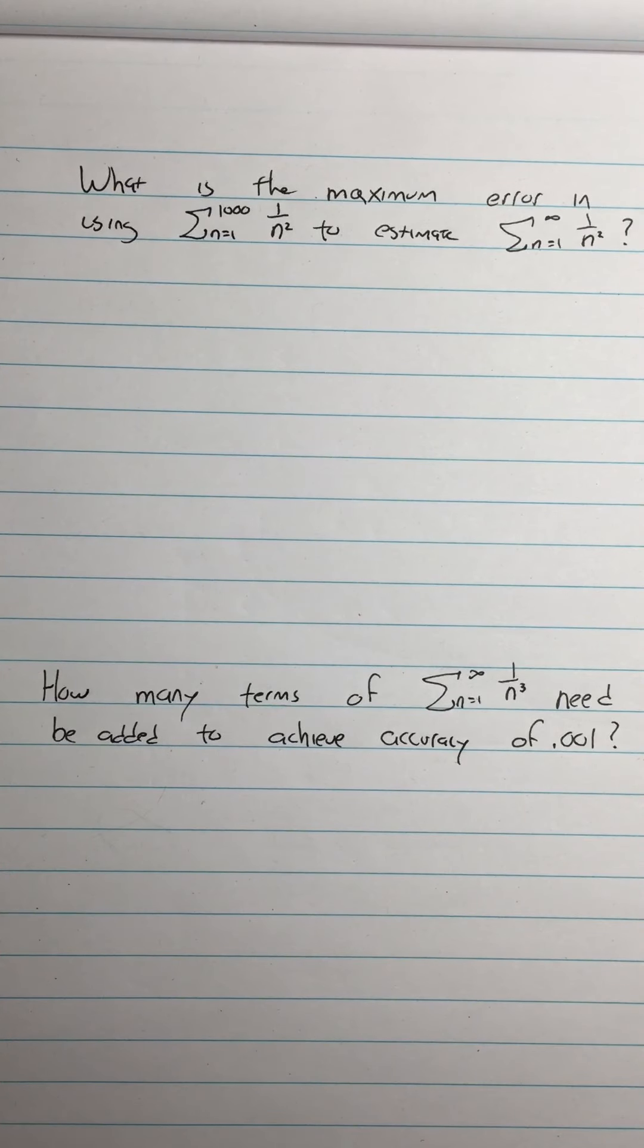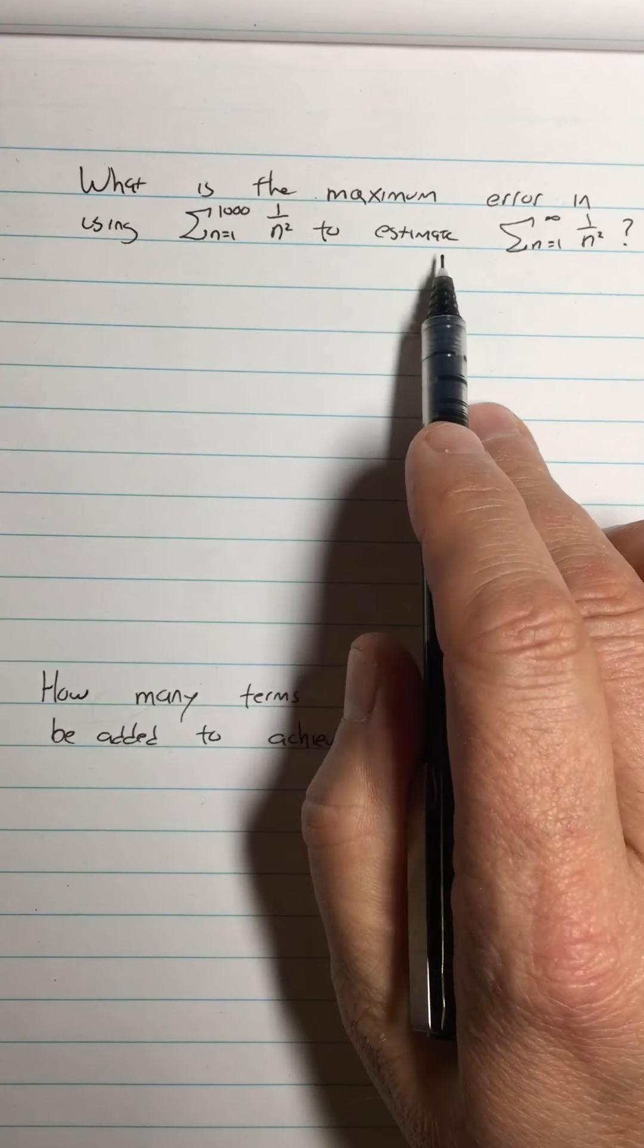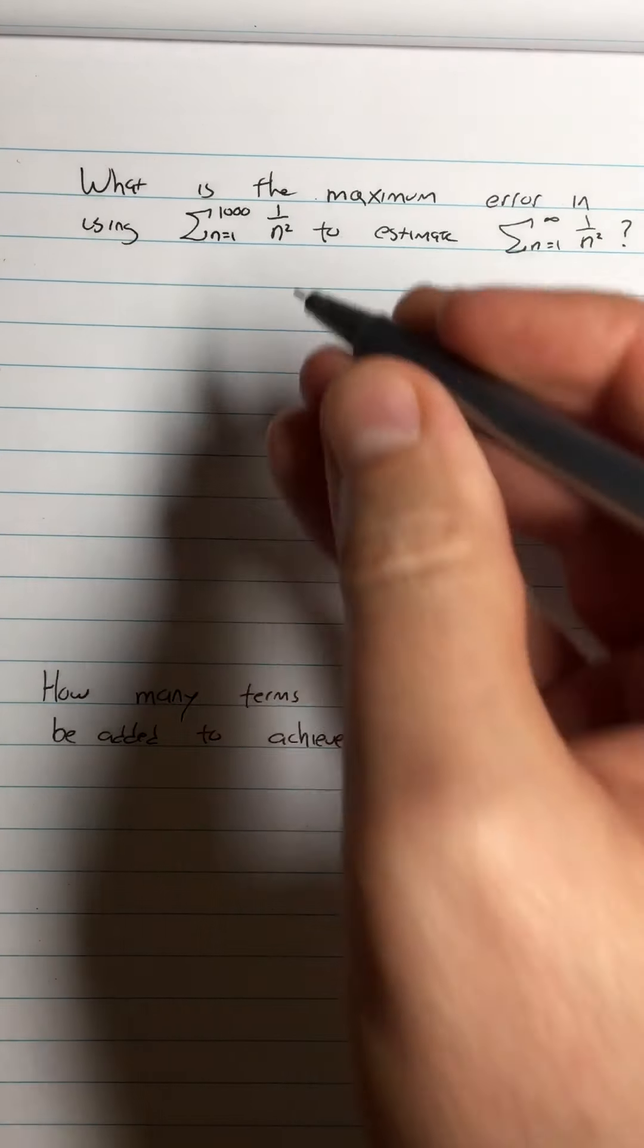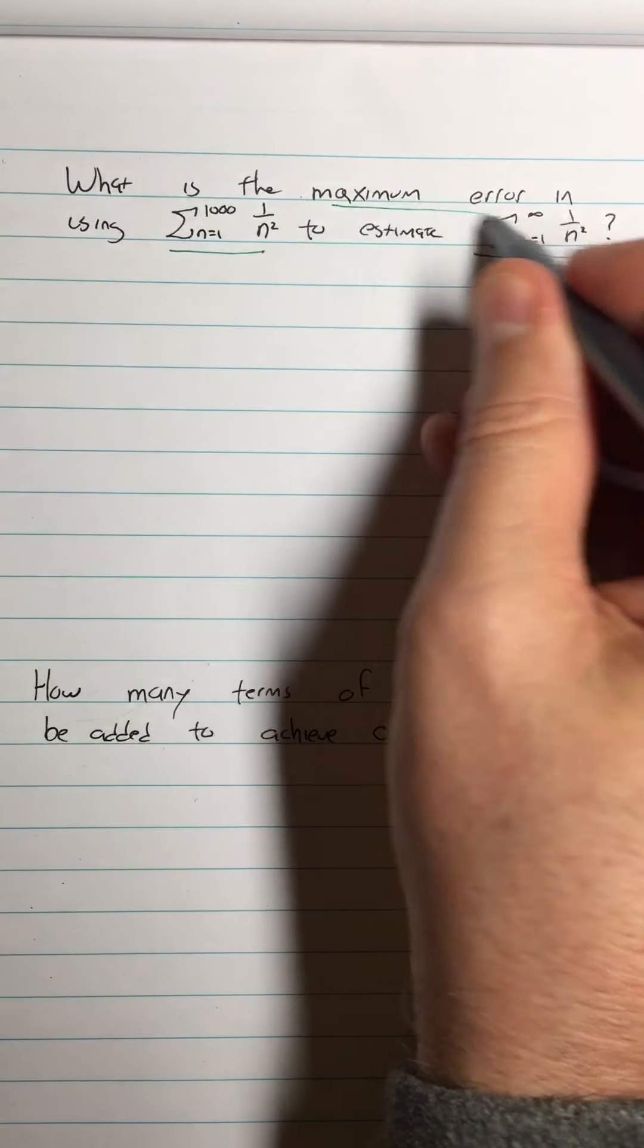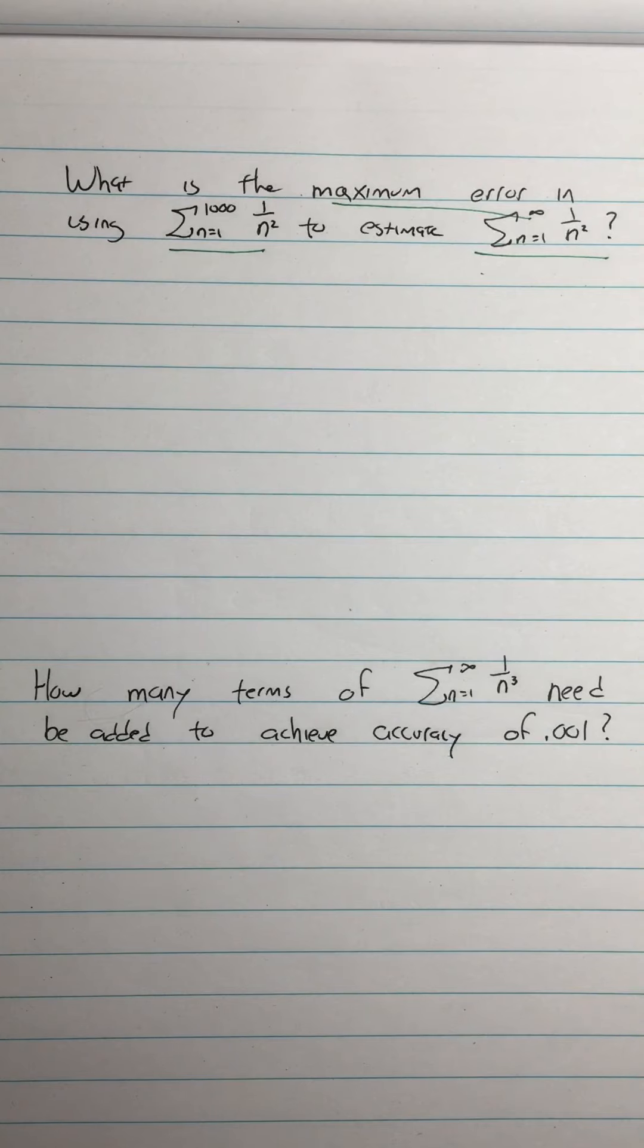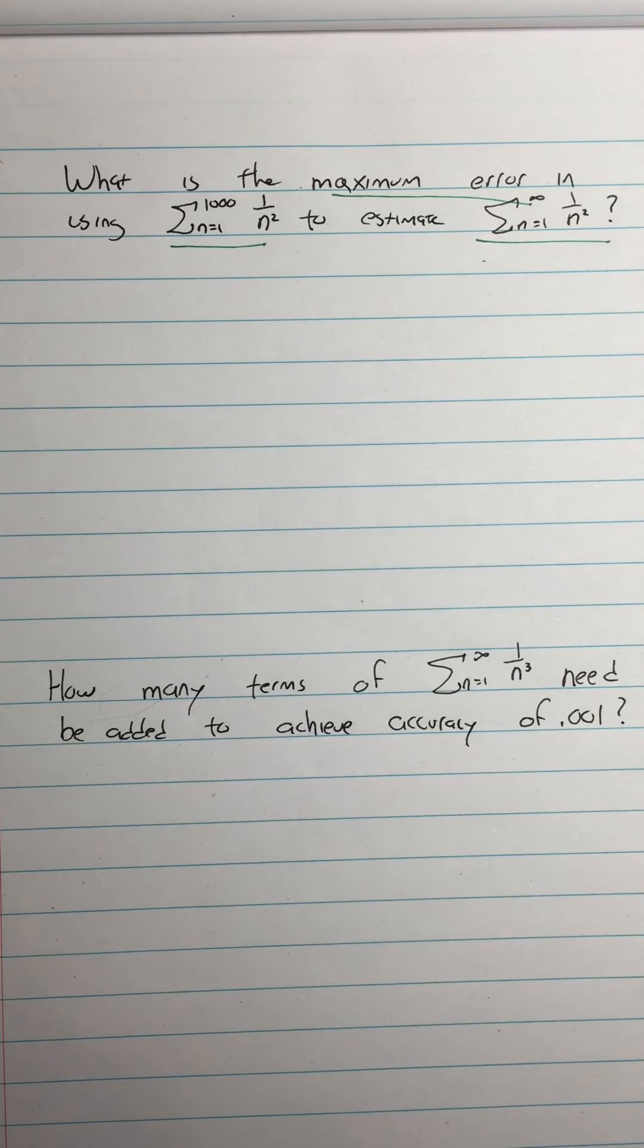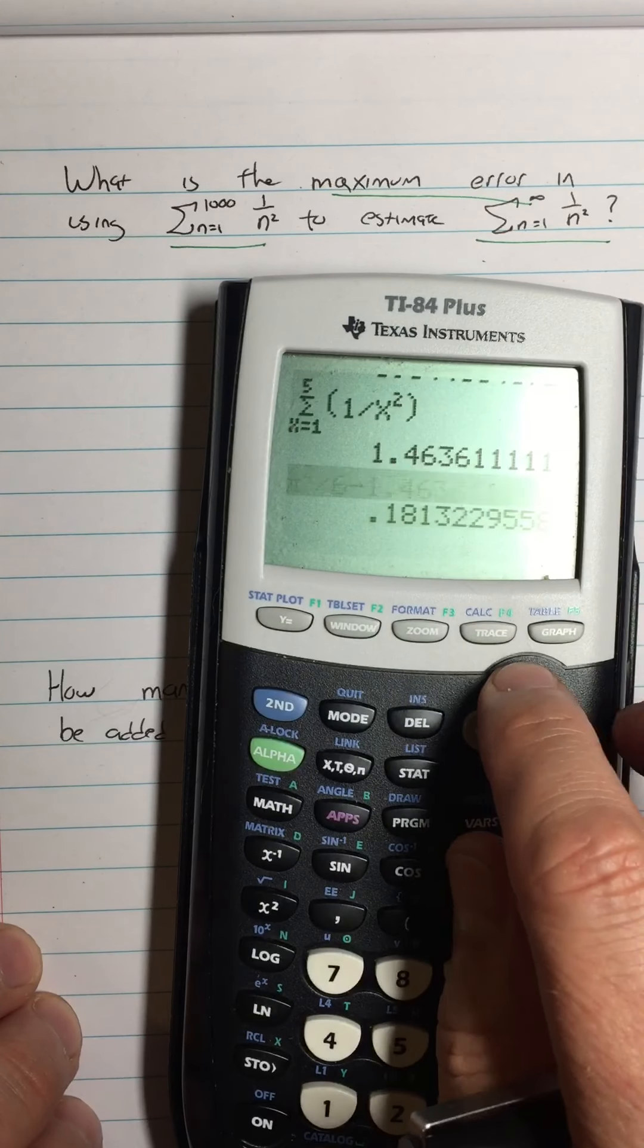So we're going to be interested in ways to find those values. Let's look at a couple more. What we're interested in is using finitely many terms to estimate infinitely many terms. That's what we're really talking about. When we do that, how big of an error are we committing? We can get an upper bound on that error.